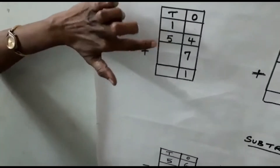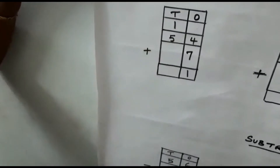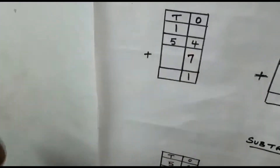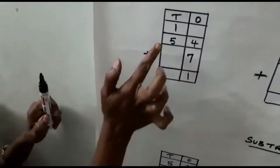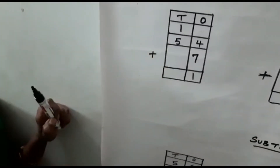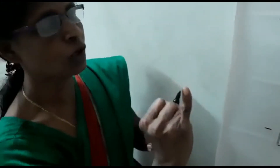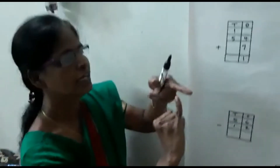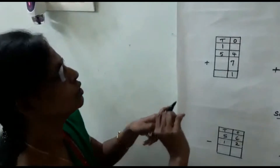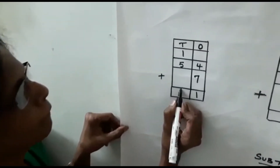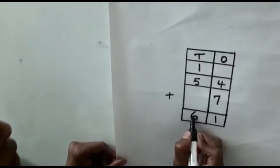So with both you must add it now. 5 plus 1: 5 is the biggest number, keep it in your mind. 1 is the smallest number. So after 5 — 6. So 6 is the answer.